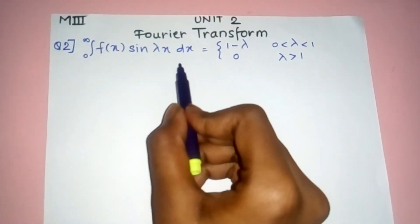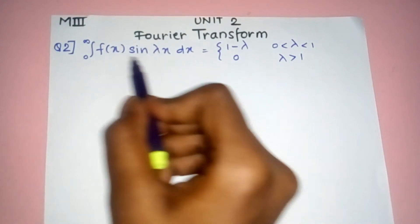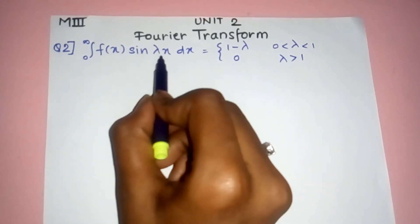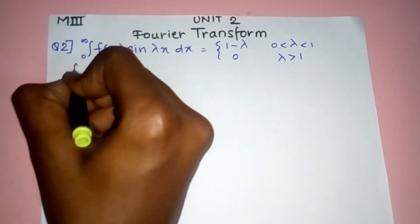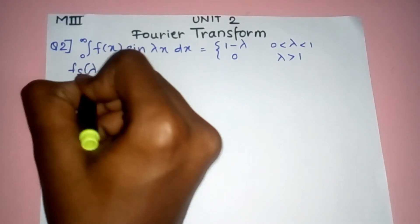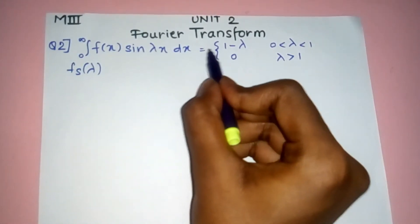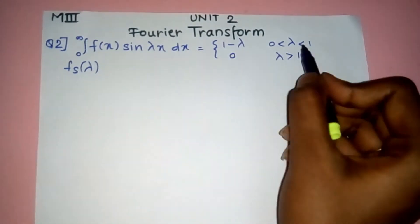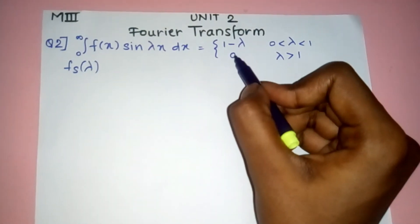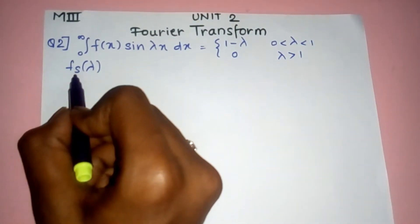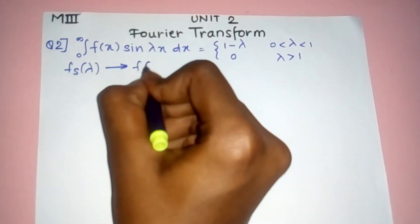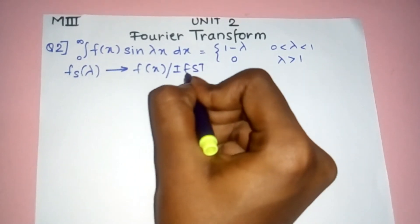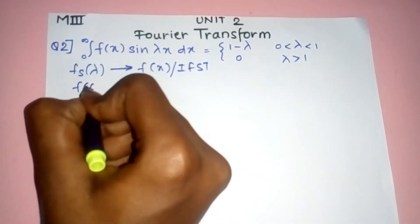This is the question — such type of questions are given in exams. If you look carefully, you will see that this is a formula of FST. So they have given F_s(λ) with two piecewise values and the corresponding limits, and they are telling us to find the inverse — that is, we have to find F(x), the inverse Fourier sine transform (IFST).